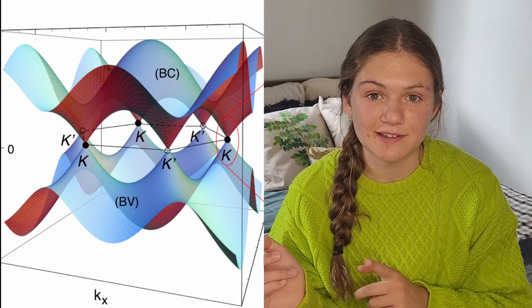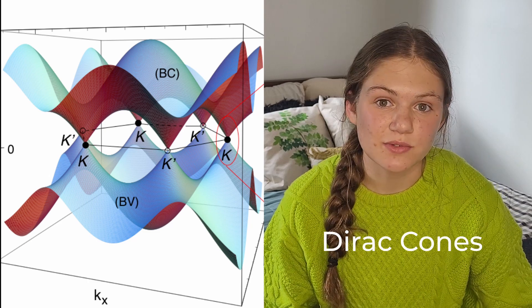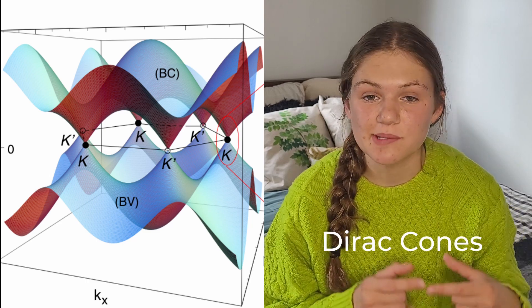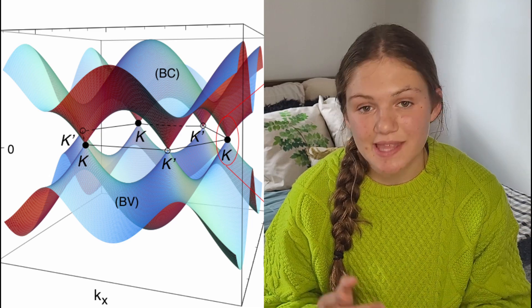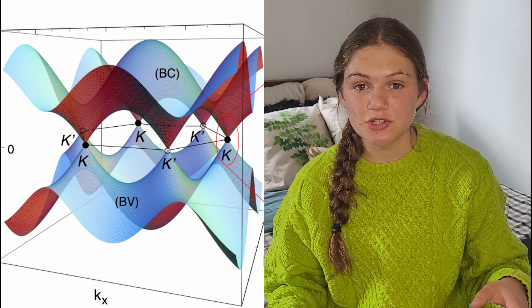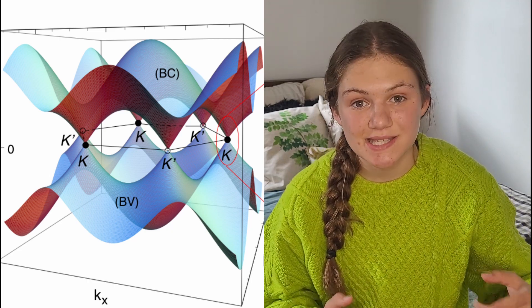Graphene has a super interesting Brillouin zone — it's got these six cones in it called Dirac cones, and at the top of them there's a point called the Dirac point, written as K and K prime. When electrons get near these points, they start to behave as something called massless Dirac fermions. This basically means the electrons act as though they have no effective mass, which means they start moving super fast, and this enhances the conductivity.